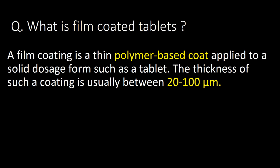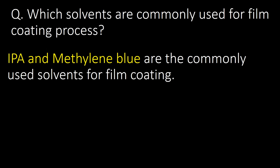What is a film coated tablet? A film coating is a thin polymer-based coat applied to a solid dosage form such as a tablet. The thickness of such a coating is usually between 20 to 100 micrometers. Next question: which solvents are commonly used for the film coating process?